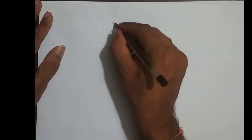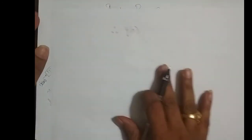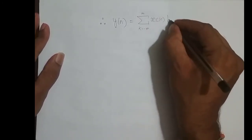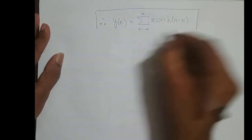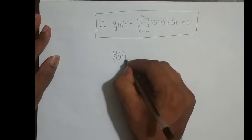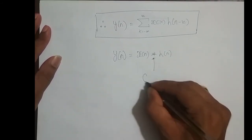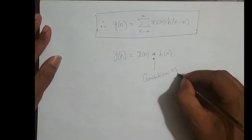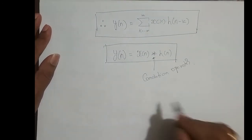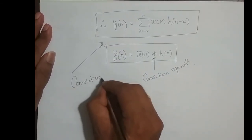Therefore, y(n) equals summation k from minus infinity to infinity of x(k) times h(n minus k), which is the output of an LTI system. In short, we can also write it as y(n) equals x(n) star h(n), where star is the convolution operator. This equation is called the convolution sum because this is the output of a discrete time system.